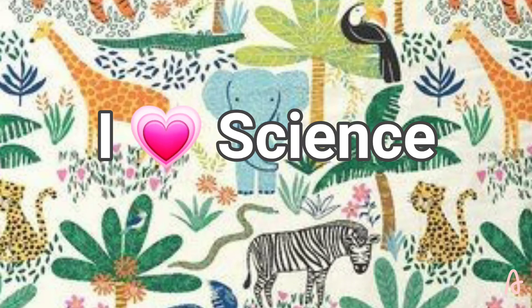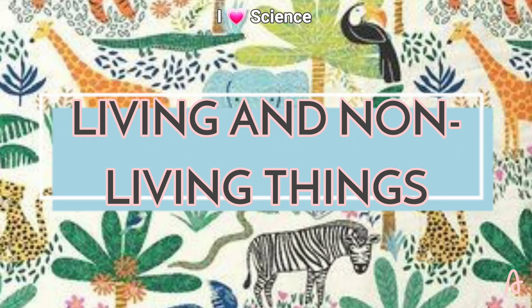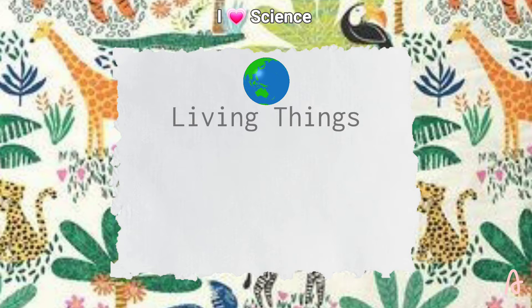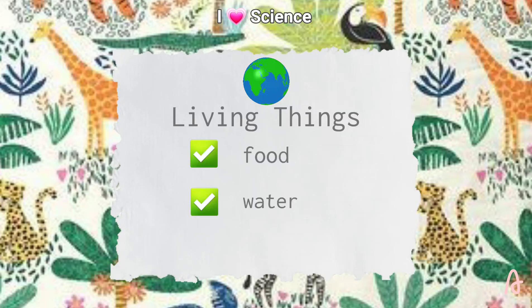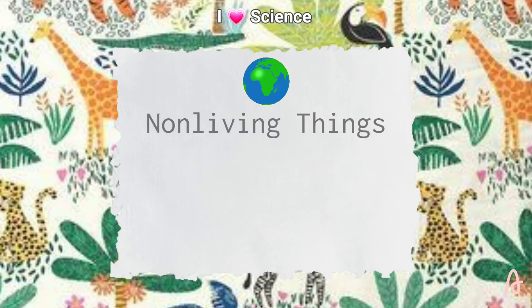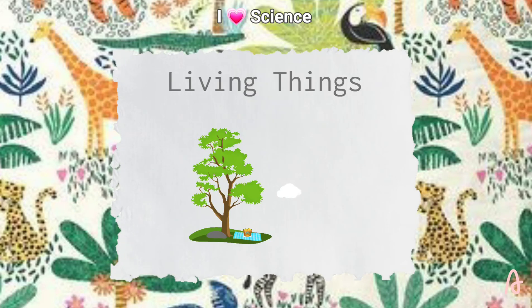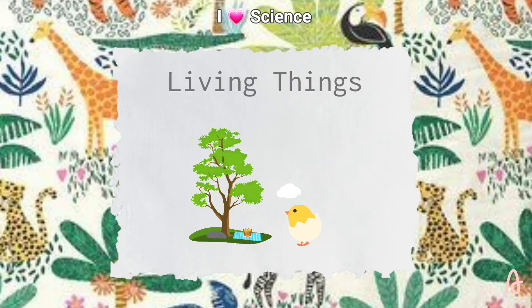Welcome to I Love Signs! Living and non-living things. The world is made up of living things and non-living things. All living things grow and change. They need food, water, and air. Things that are not alive are non-living. They do not need food, water, and air. A tree and a chick are living things. They come from other living things.